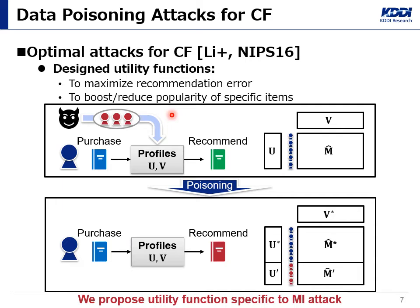Finally, I will explain existing poisoning attacks for factorization-based CF. In these attacks, the adversary creates malicious user accounts and gives ratings to the system according to an intended purpose. If the malicious rating matrix is added to the rating matrix, the prediction changes from M-hat to a corrupted M-hat. As a result, recommended items also change. Lee et al. proposed a method to optimize the malicious rating matrix for the adversary's purpose by designing utility functions to measure effectiveness. They proposed two utility functions: to maximize recommendation error and to boost or reduce the popularity of specific items. In our research, we define a specific utility function for casting our model inversion attack as an optimization problem.